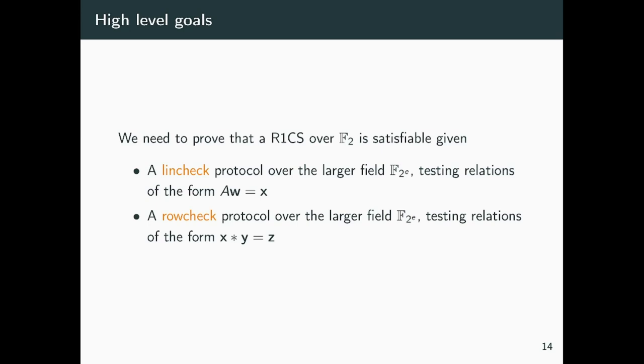Just to clarify what our goal is in the rest of the construction, now that we have this useful tool, the RMFE, we want to produce a Lincheck and a Rowcheck that works over F2. To do so, we will actually reduce to a Lincheck and a Rowcheck over the larger field, which is already provided by the SNARKs we are reducing to, which could be Ligero, Aurora, or Ligero++.